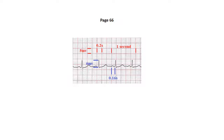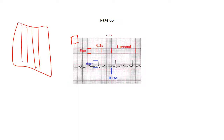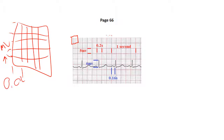On standard paper — all EKGs everywhere use this paper — you have big boxes, and within each big box there are five small boxes. Each small box going horizontally is 0.04 seconds, so five small boxes make one big box equal to 0.2 seconds. Vertically, each big box represents 5 millivolts.